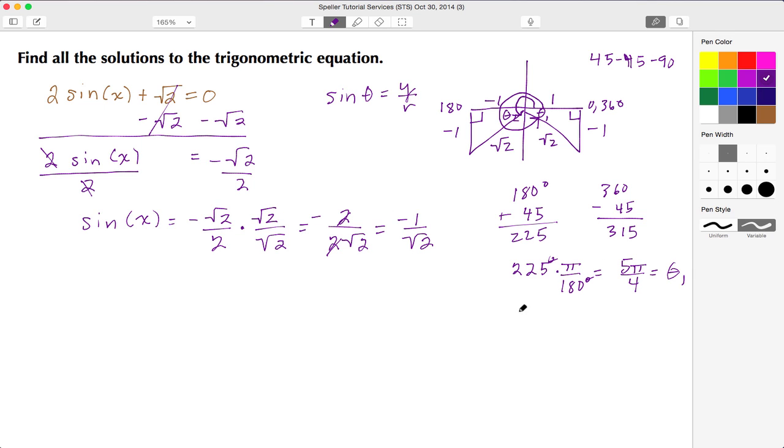Now when I figure out θ₂, it'll be the same thing. 315 degrees times π over 180 degrees. The degrees cancel, and when I simplify this, this turns out to be 7π over 4, and this here is for θ₂.